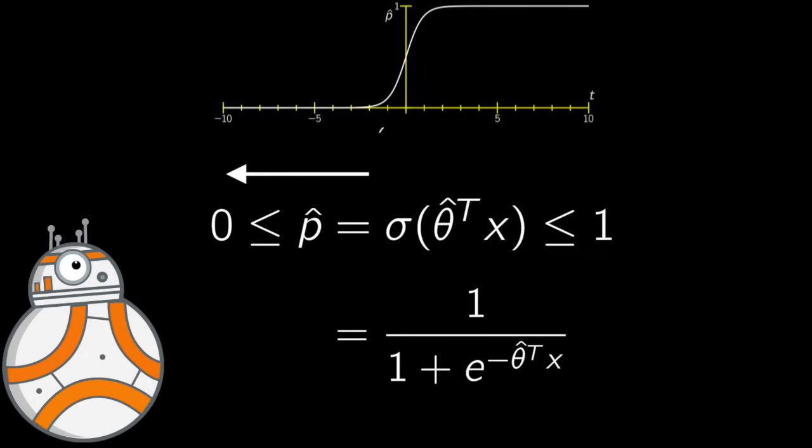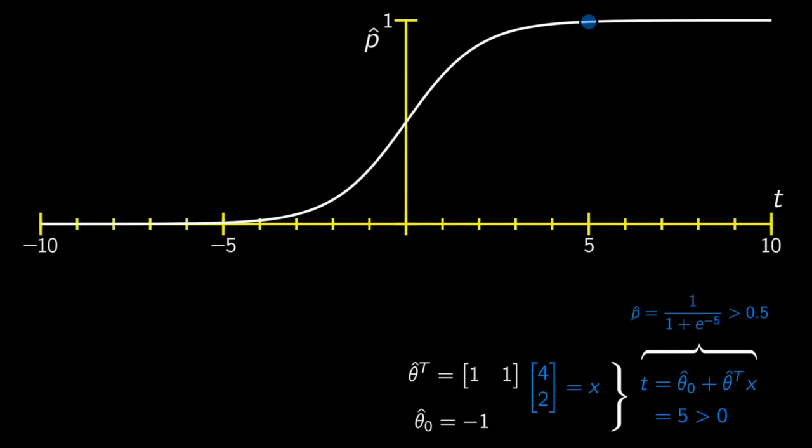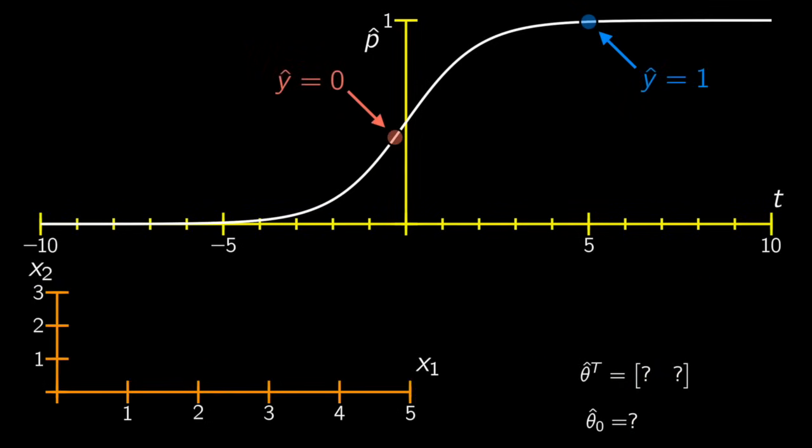Now, once the logistic regression model has estimated the probability that an instance x, for example, belongs to the positive class, it can then make its prediction y hat easily. So if p hat is greater than 0.5, y hat could be classified as one; else it's classified as zero. Now you know how a logistic model estimates probabilities and makes predictions.